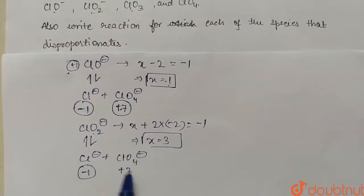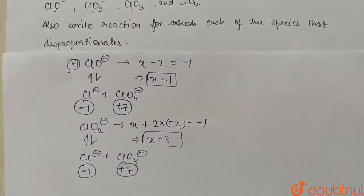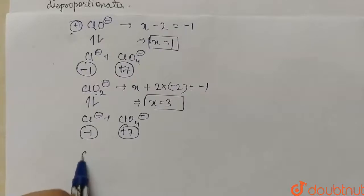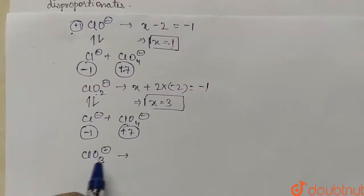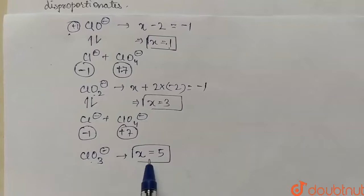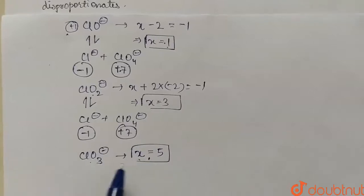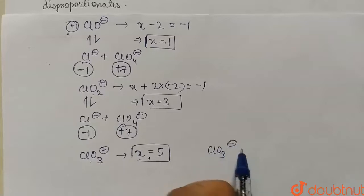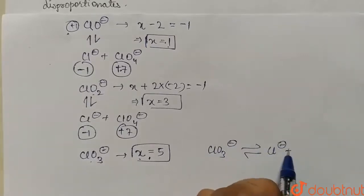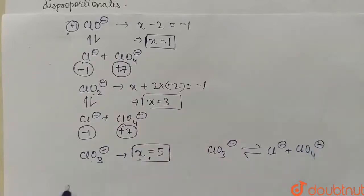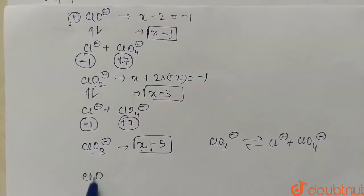Chlorine goes from minus one to plus seven oxidation state in that reaction. Third, we have ClO₃⁻. In ClO₃⁻, the oxidation number of chlorine comes out to be plus five. Since it is also an intermediate oxidation state, this will also disproportionate into Cl⁻ and ClO₄⁻.